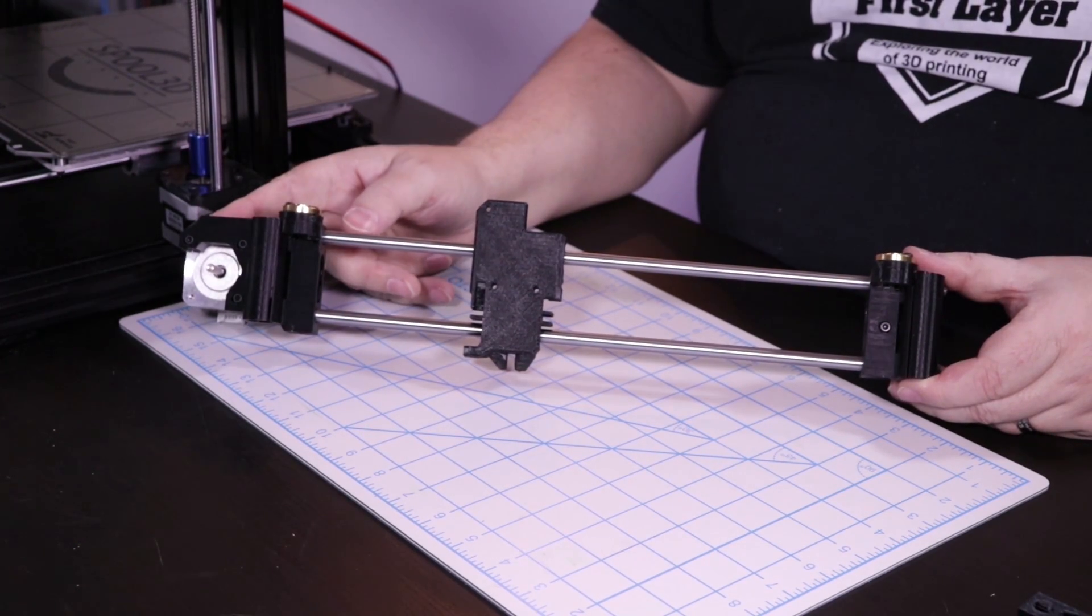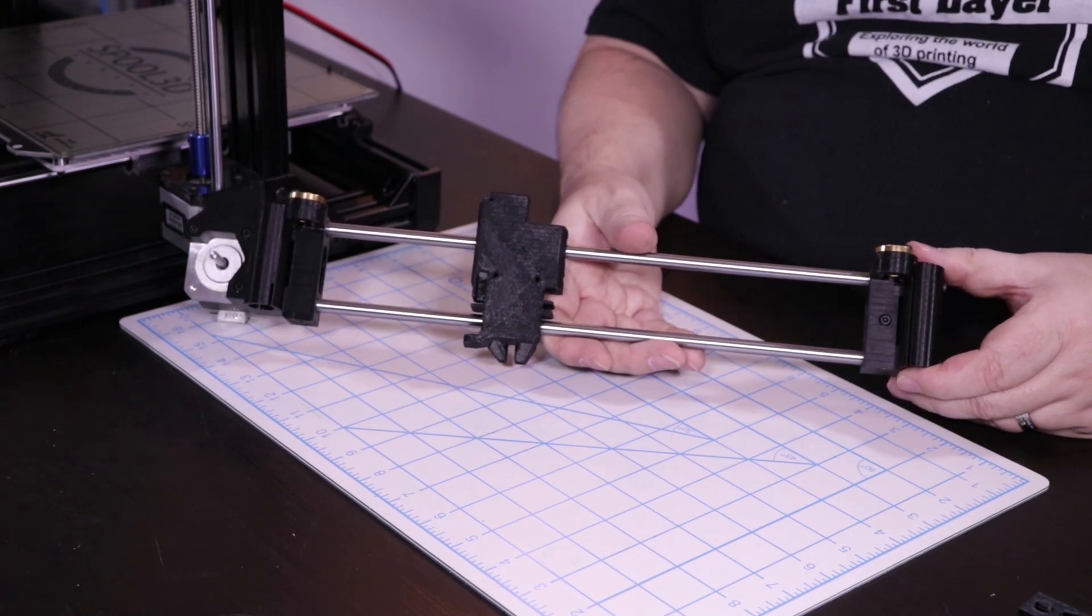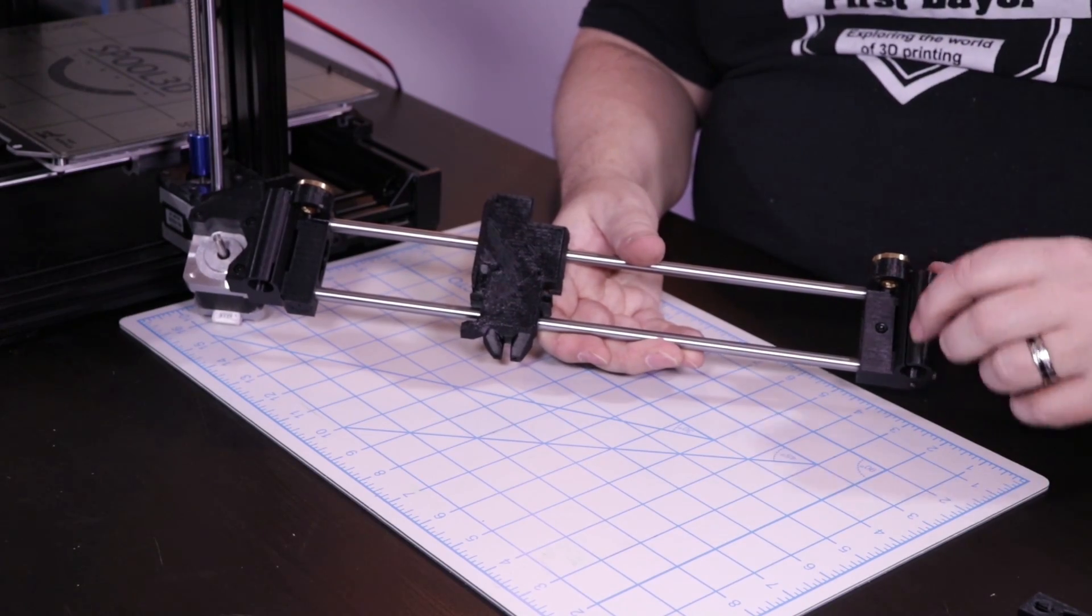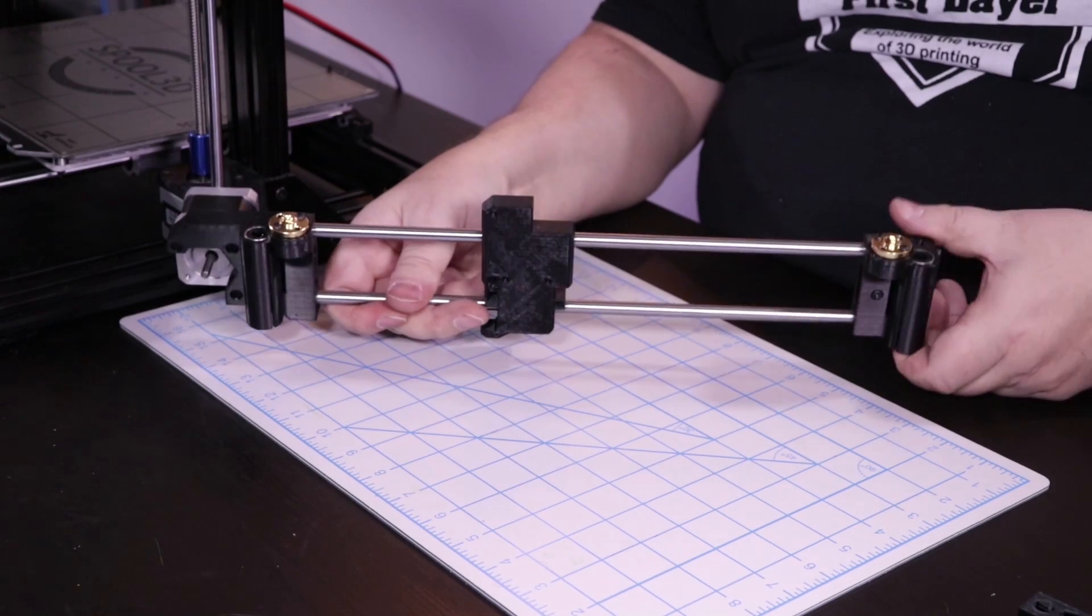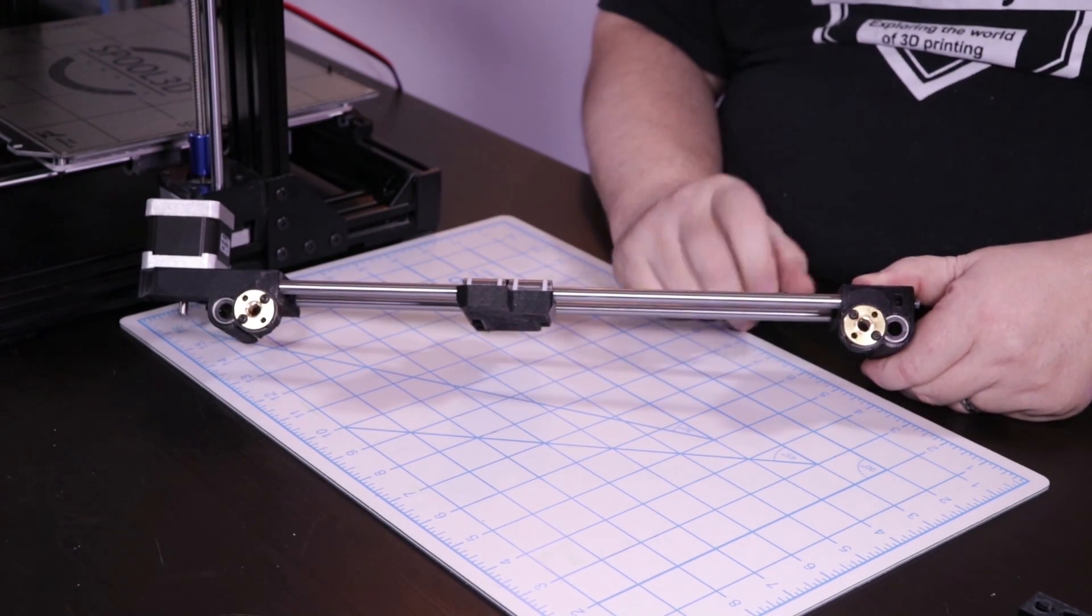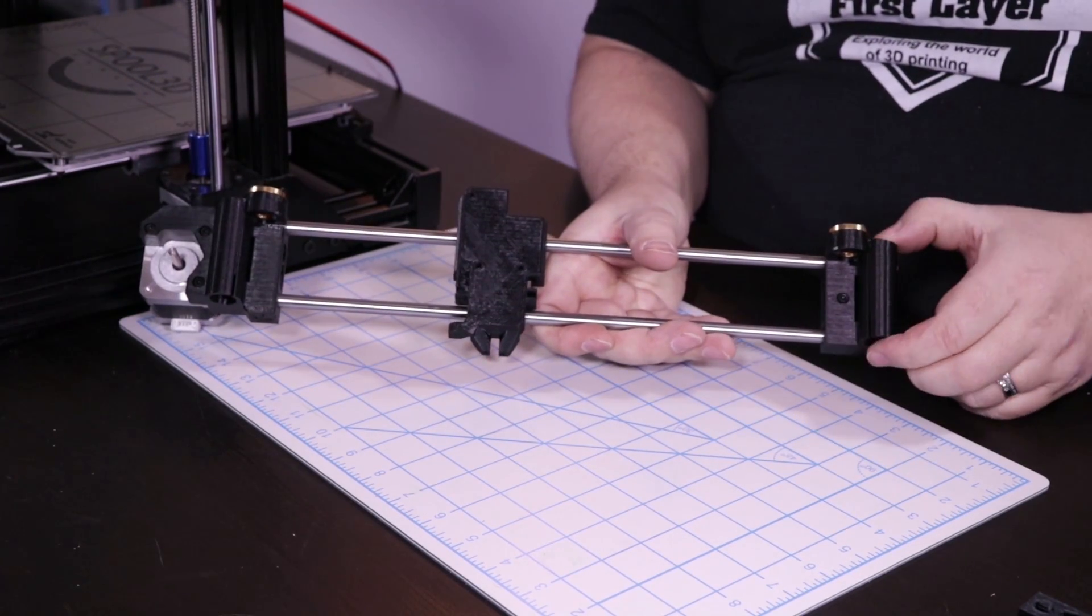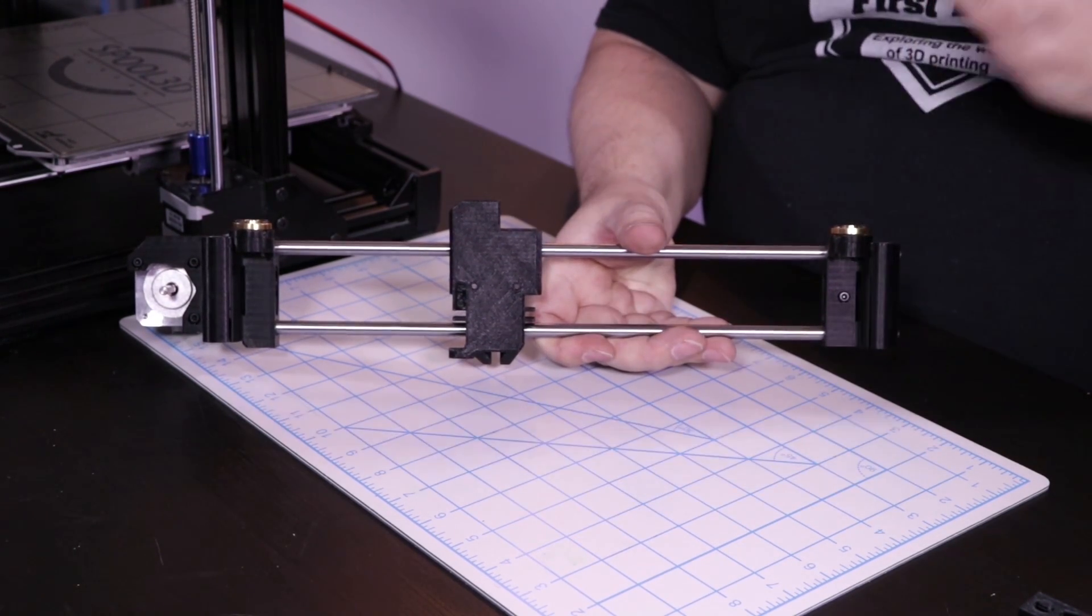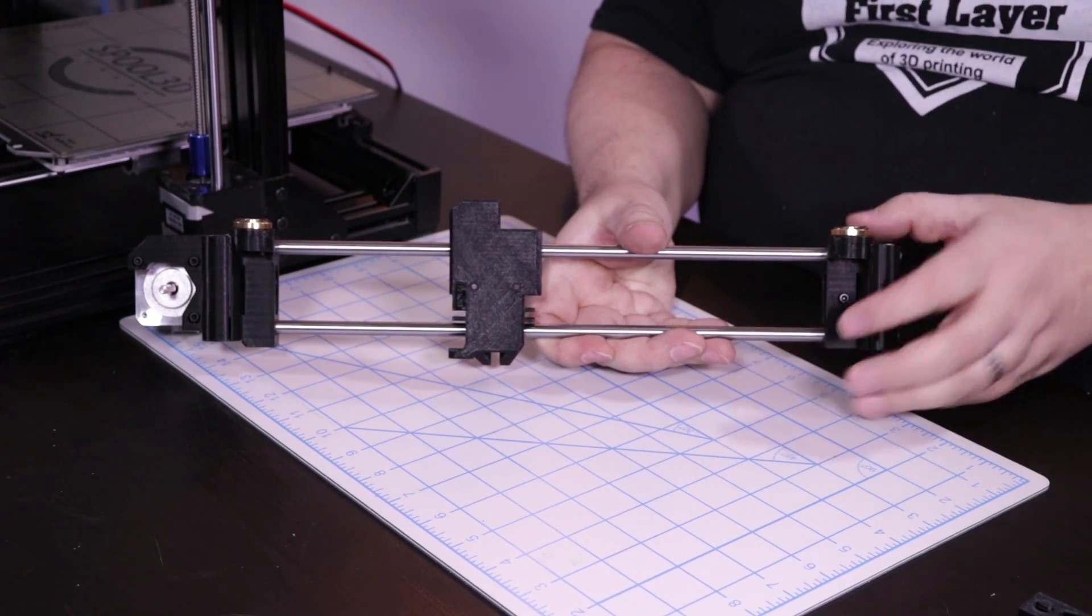We went ahead and obviously mounted the motor. We put in our bearings. And in this case, we're not using small LM8UU bearings. We're using the long version. So there's only one bearing in here. And the reason that I like a single bearing is it keeps the rods from binding up. If you have two bearings, what can happen sometimes is it can get bound up in there because they're not perfectly aligned.